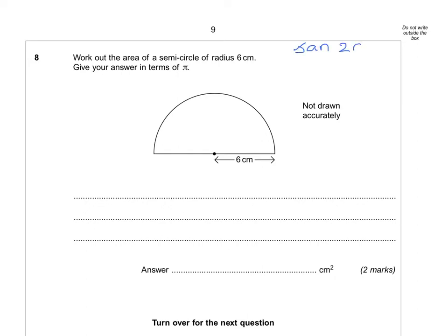January 2013, paper 1, non-calculator. Question 8: work out the area of a semicircle with a radius of 6 centimetres. Give your answer in terms of pi.